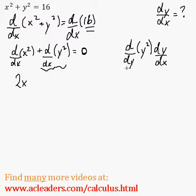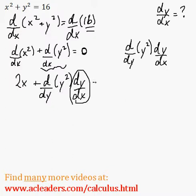So let me just quickly rewrite this as d dy of y squared times dy dx, which is what we want to isolate, equals zero. So 2x plus d dy of y squared is just the derivative of y squared, which is 2y according to the power rule, times dy dx equals zero.